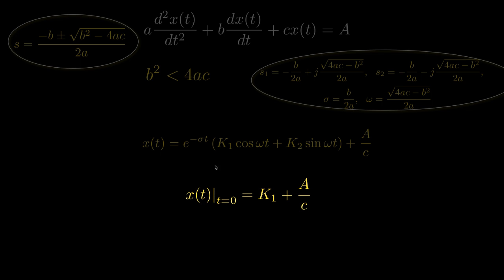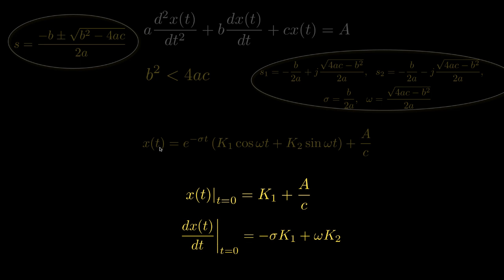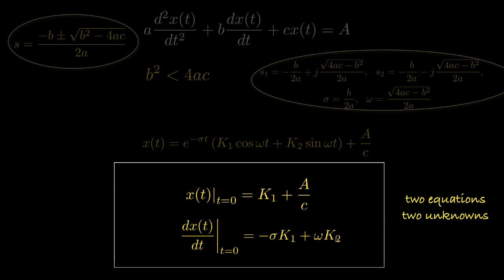If we look at x of t when t equals 0, we get k1 plus a over c, giving us an equation for k1. Using the initial condition for the derivative and evaluating at t equals 0, the remaining terms are negative sigma times k1 plus omega times k2. As before, we'll have two equations from our initial conditions that give us two equations for the two unknowns k1 and k2.